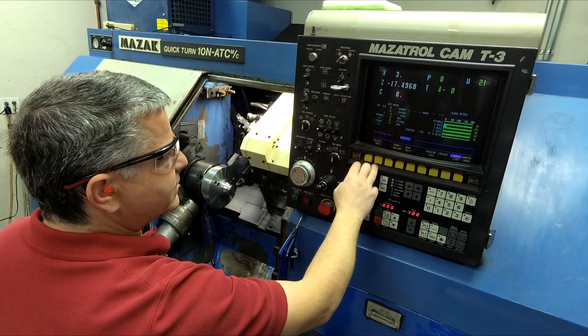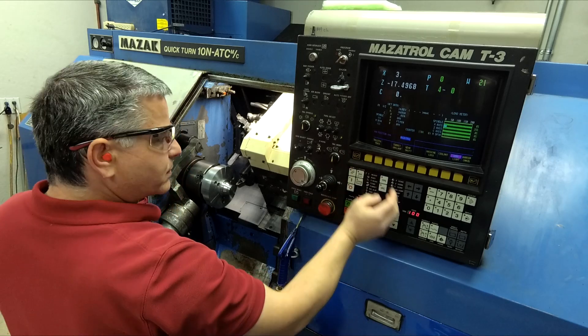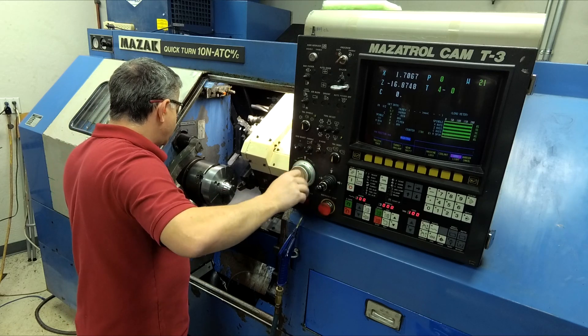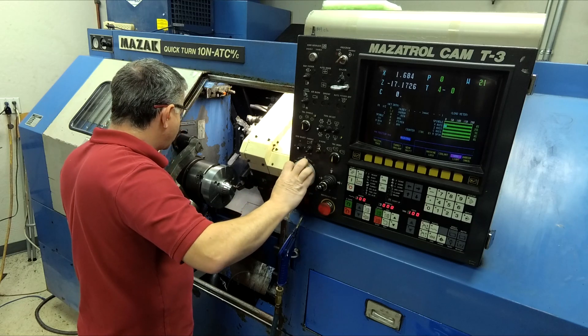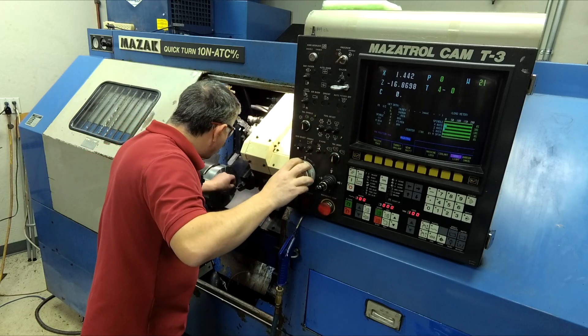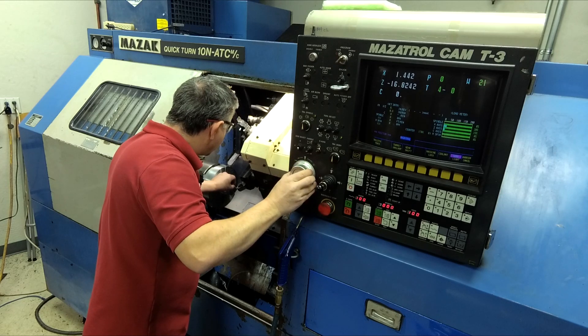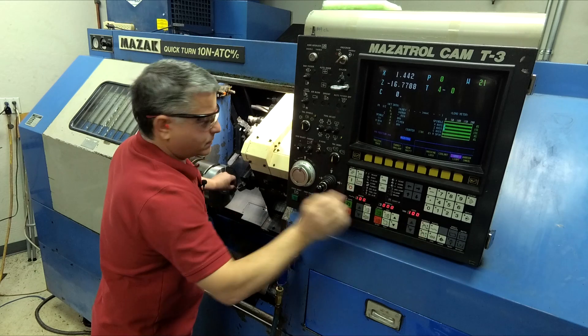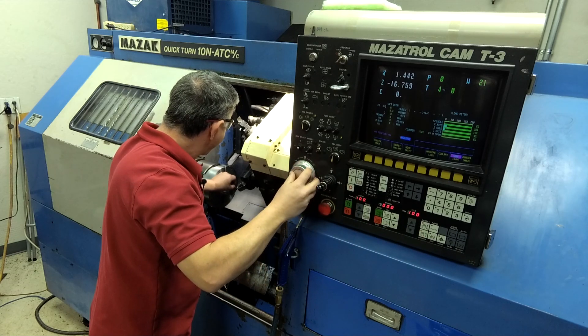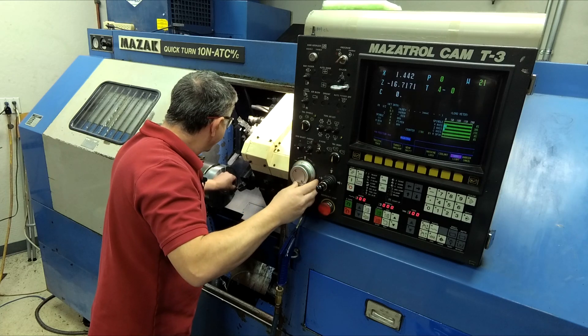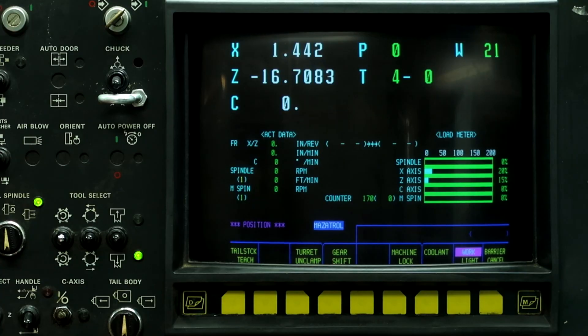So the next thing we need to do is teach the Z, and the Z gets a little trickier. So what we need to do is bring the tool down to the face of the part and we're going to use the half inch dowel pin using the same method. So once we get it where it would just slip through, alright, just slip through. So now we're a half inch in front of our part.